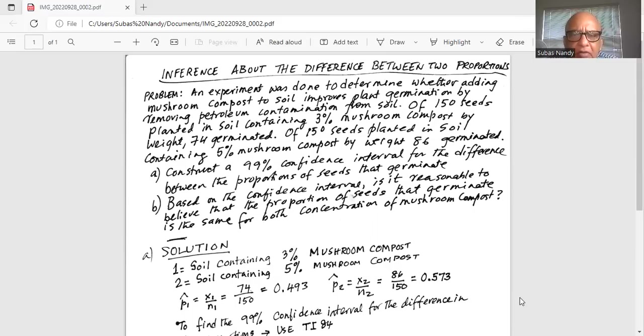In the next one, of 150 seeds placed in soil containing five percent mushroom compost by weight, 86 germinated. Construct a 99 confidence interval for the difference between the proportions of seeds that germinate.